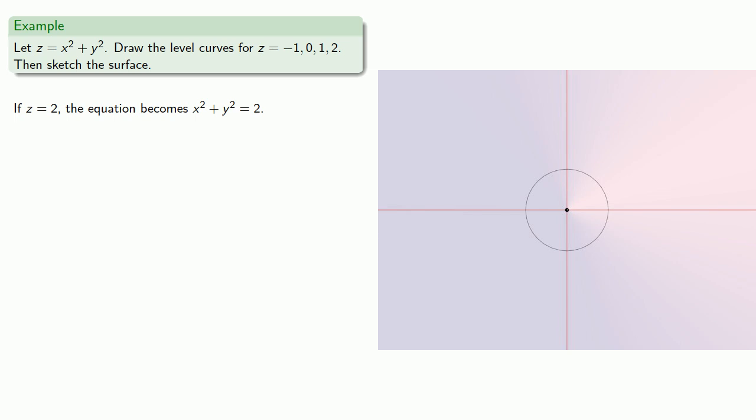If z equals 2, the equation becomes x squared plus y squared equals 2. And this is a circle with radius square root of 2 centered at the origin. And we'll graph that.